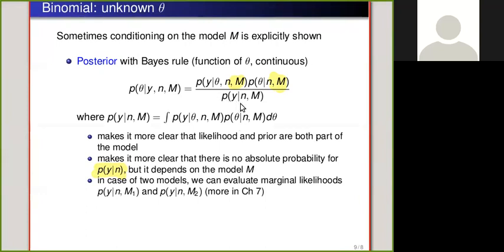Also, this normalization term, it's also actually when the y is observed, it has also the form of the likelihood. So we have now likelihood for model M1 and likelihood for model M2. And these are called marginal likelihoods, because we have marginalized away the prior. And this is discussed more in chapter 7.